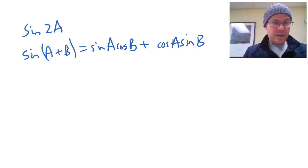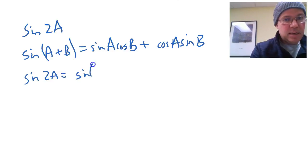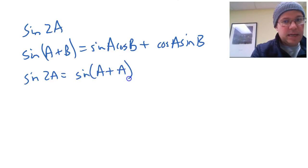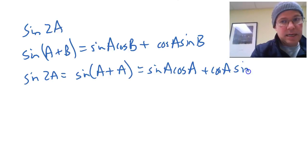So basically what we have there, so what we have there is if we swap the B for an A again, it pops out, so sin 2A is equal to sin A plus A, so swap the B for an A, and we get sin A cos A, because we've swapped the B for an A, plus cos A sin A.